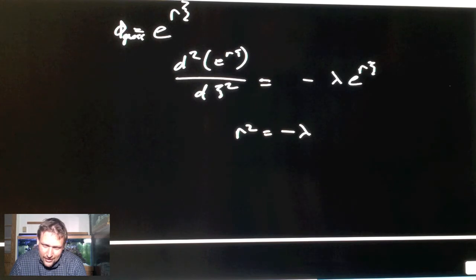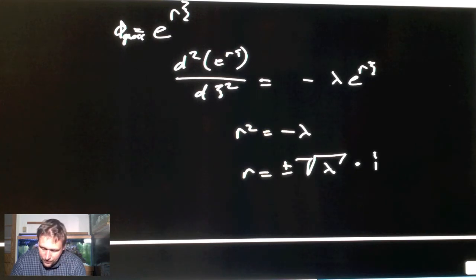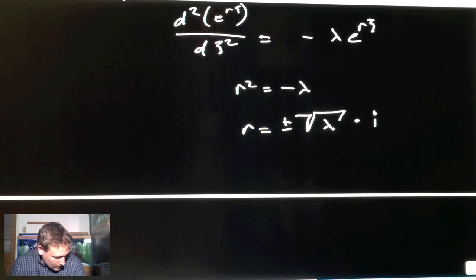Now r² equals minus λ. What is the solution to that? What squared equals minus λ? Well the only solution for this is r equals plus minus square root λ times i, the imaginary number, square root minus one.